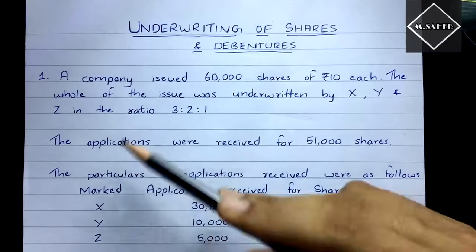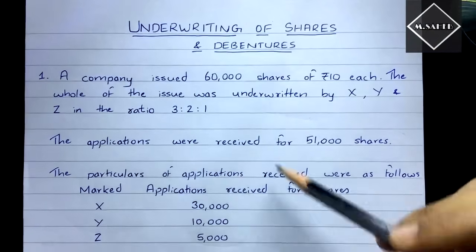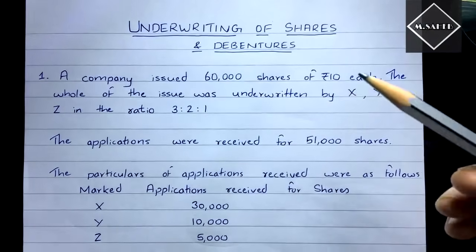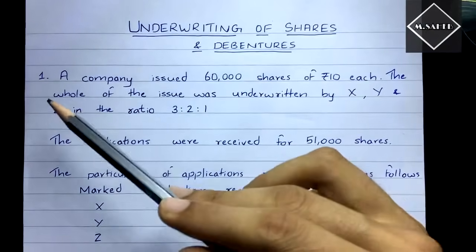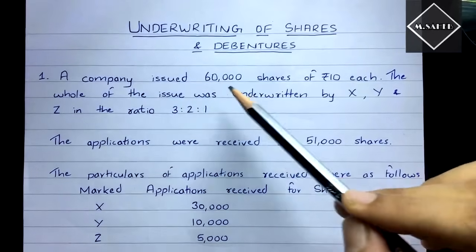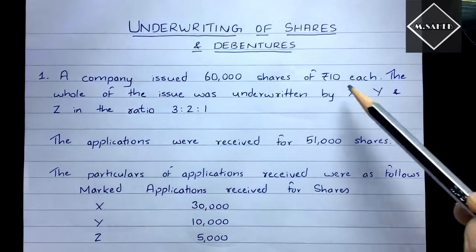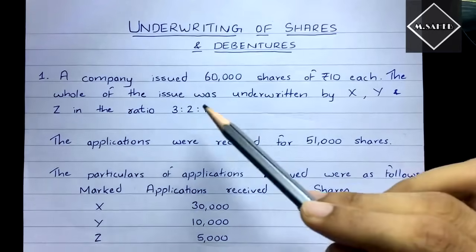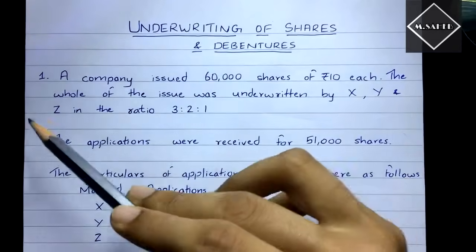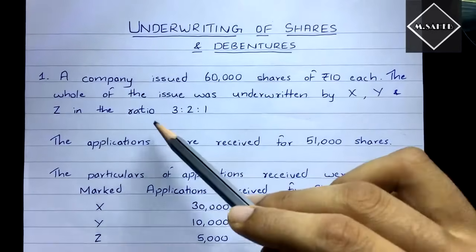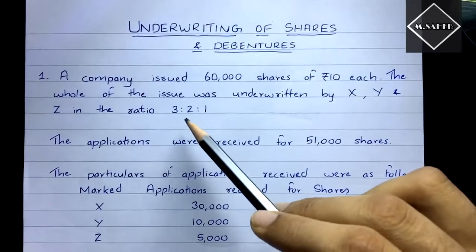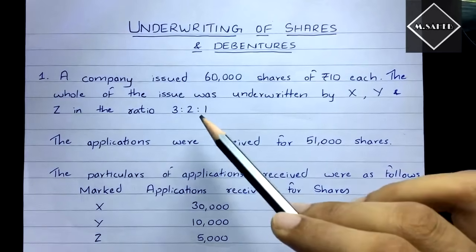In this video we are going to solve a simple problem of underwriting. Here's the question: a company issued 60,000 shares of rupees 10 each. The whole of the issue was underwritten by X, Y, and Z in the ratio of 3:2:1.